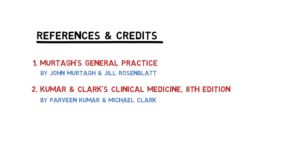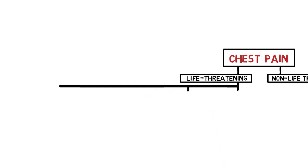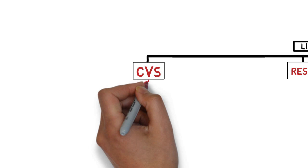We can divide the causes of chest pain into two major groups: the life-threatening ones and the non-life-threatening. The two major life-threatening groups of chest pain are due to problems in the cardiovascular and respiratory system. Differentials of chest pain from the cardiovascular system are coronary artery disease, aortic dissection, pericarditis, and pulmonary embolism.